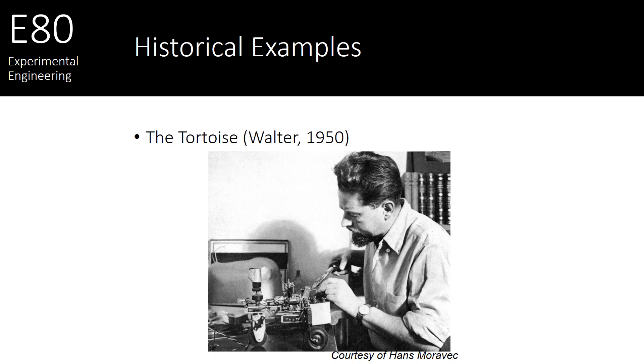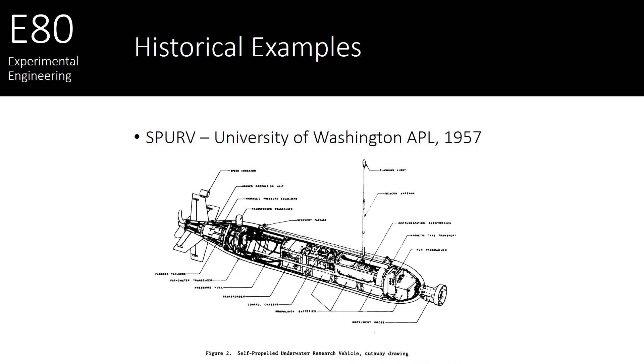Now they look a lot different than what we're using in class, largely because we're in the underwater world. The first autonomous underwater vehicle, AUV, was built at the University of Washington in the applied physics lab. The SPERV, the Self-Propelled Underwater Research Vehicle, was used to go collect data in the ocean. This thing can go down to about 1,000 meters. And if you look at this cutaway view, you get the impression that this thing looks sort of like a torpedo. And most of the AUVs being built at that time and on were in this torpedo shape, largely so that they could move faster and farther underwater.